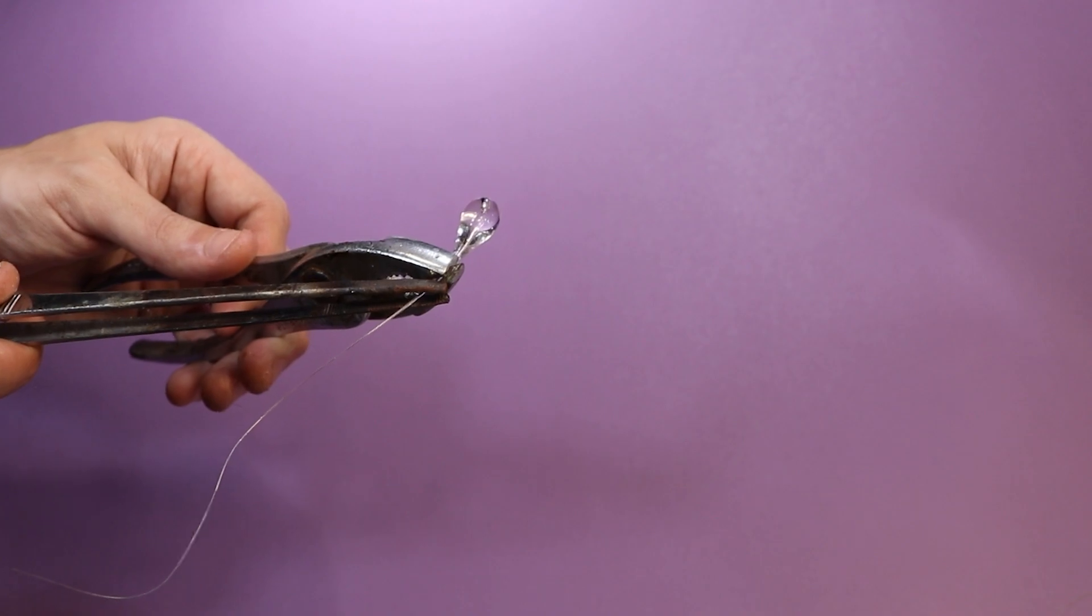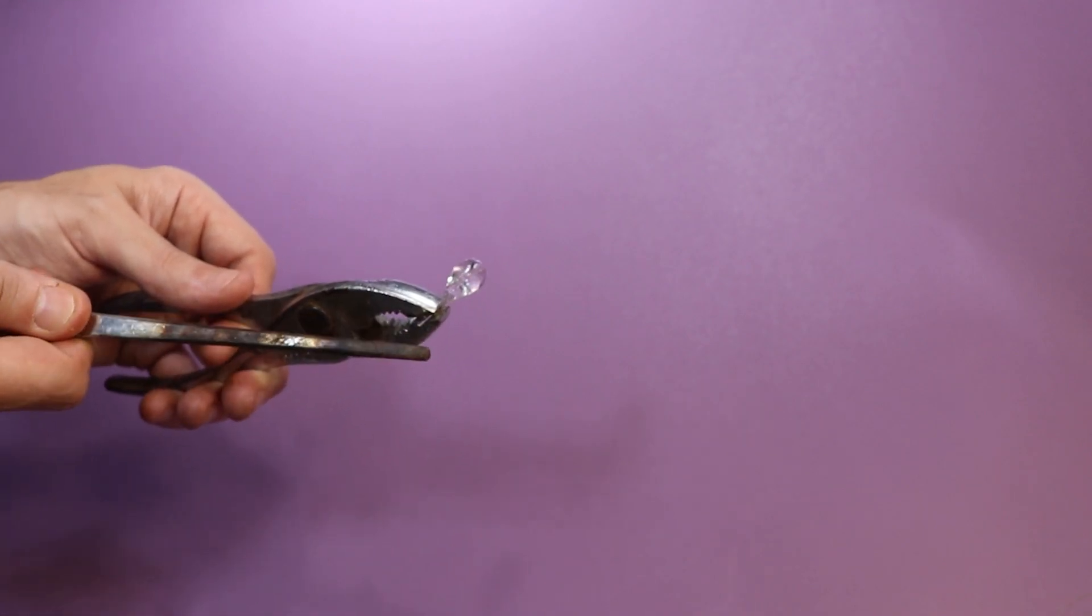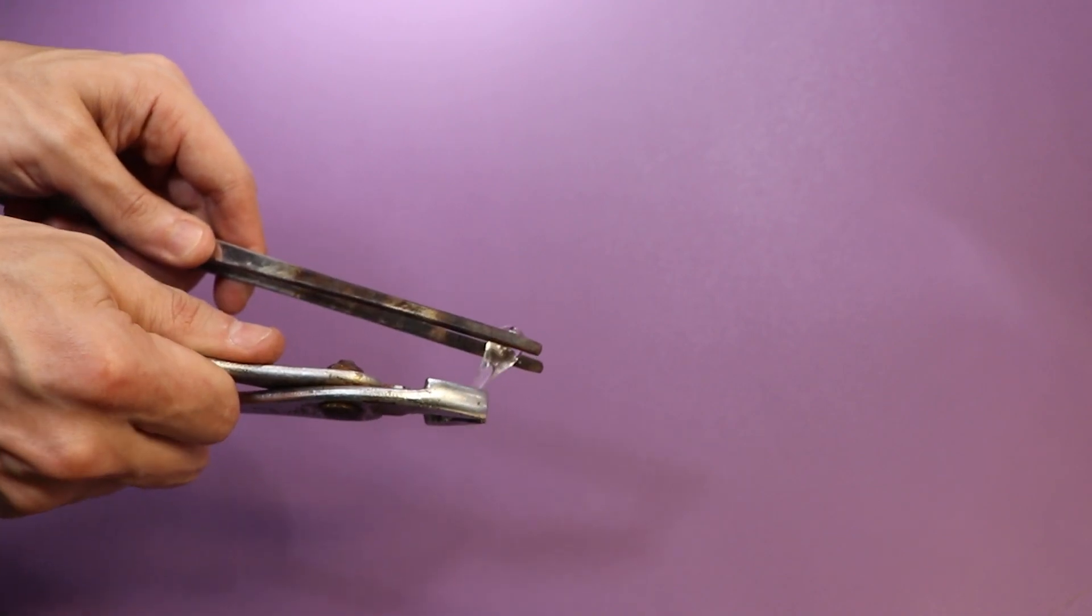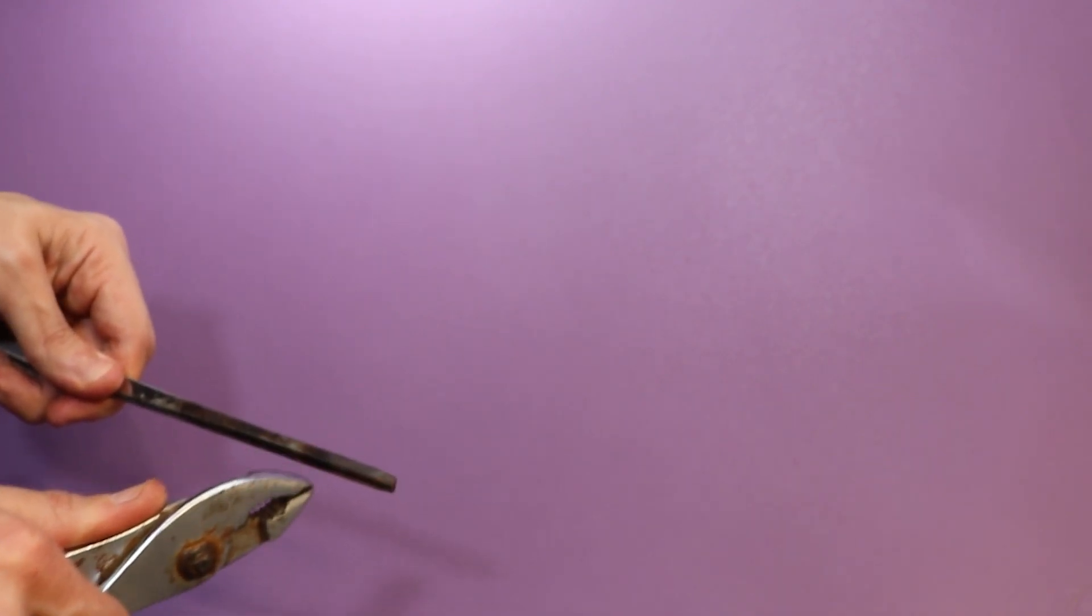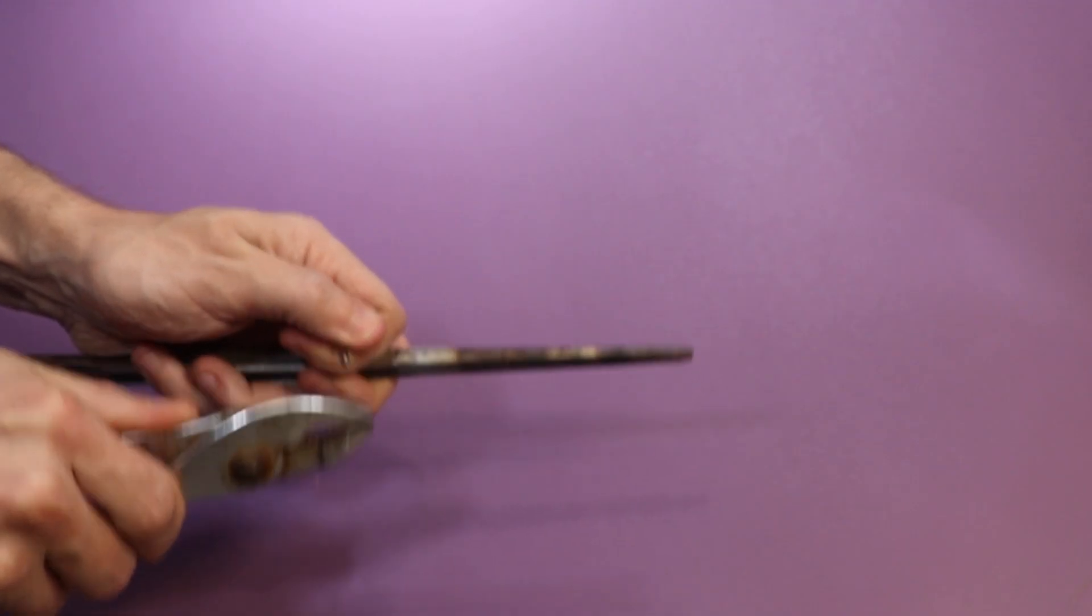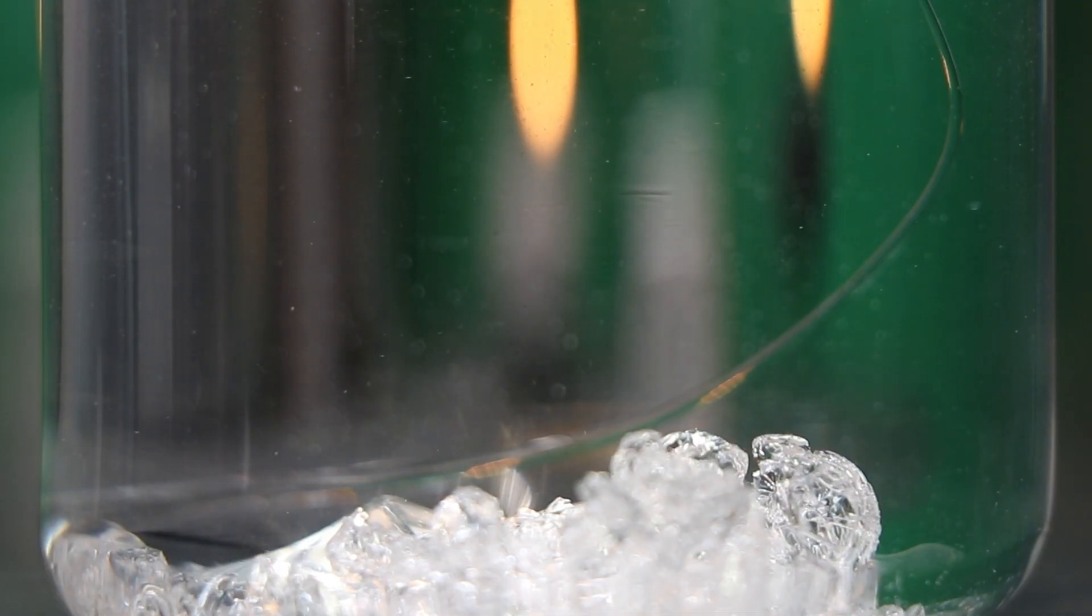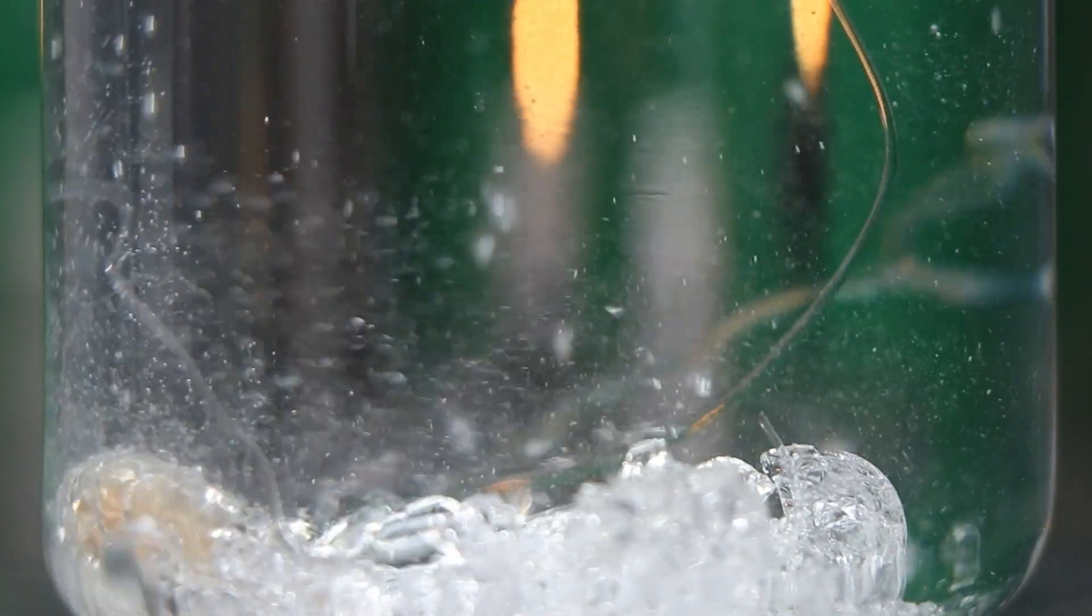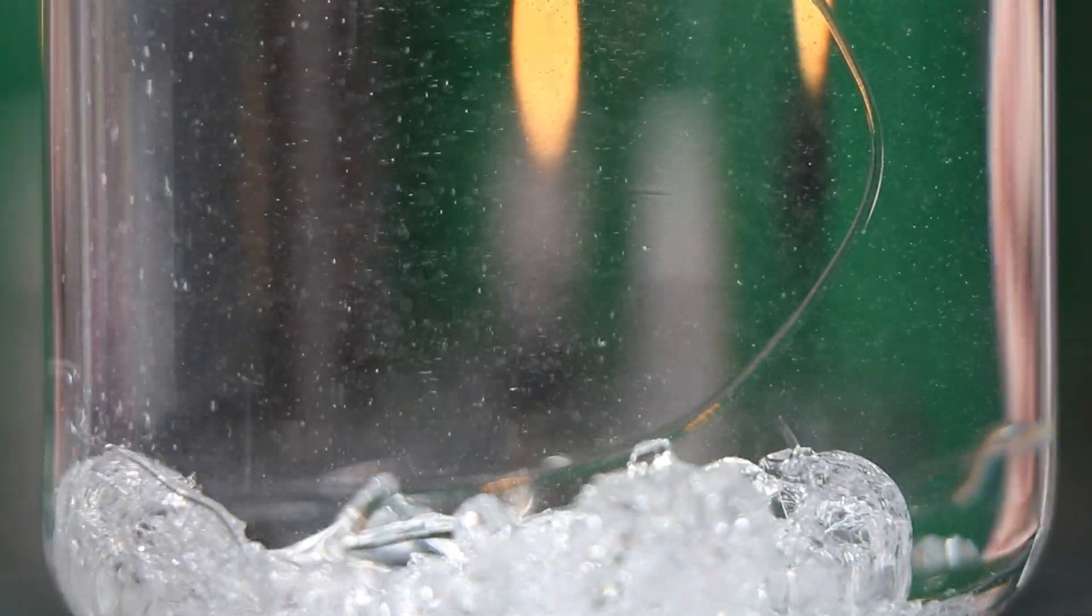Now to test the borosilicate droplet to see if it'll explode as well. And so I broke the tail and it didn't seem to do much. This harder glass compared to soda lime has a coefficient of expansion three times lower, which means it expands and contracts three times less to thermal expansion.